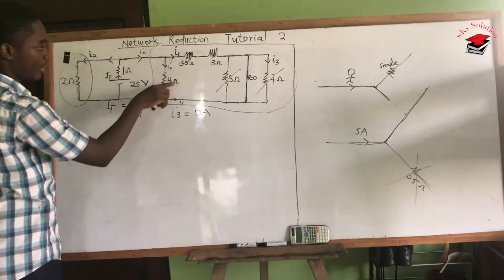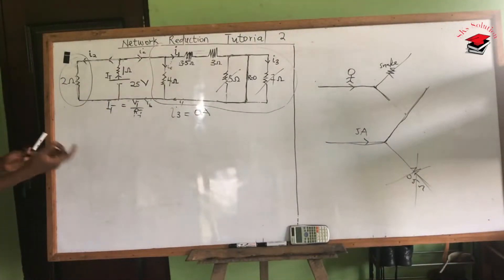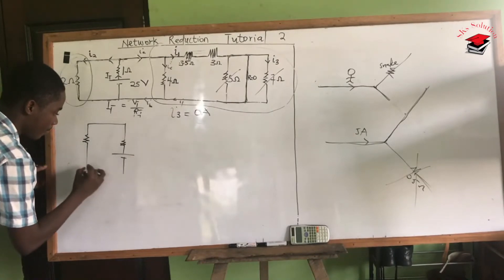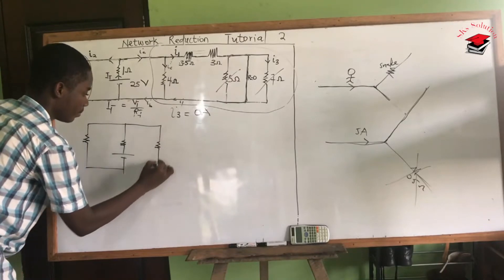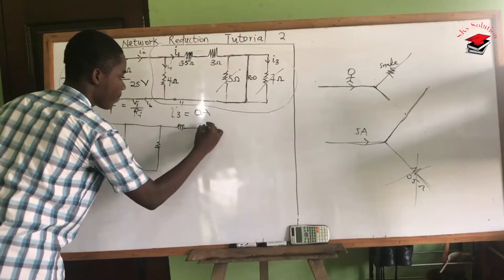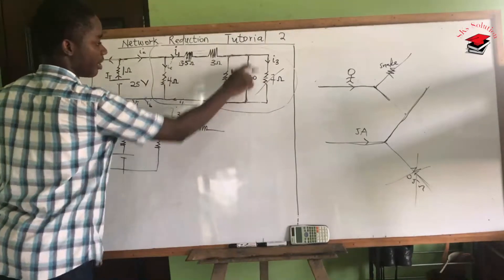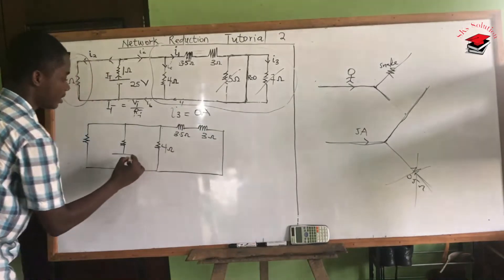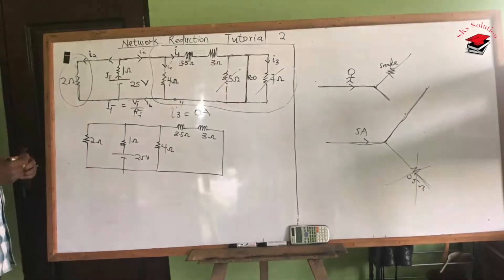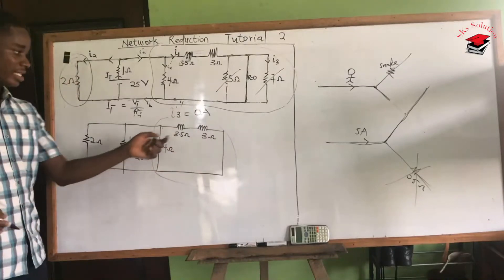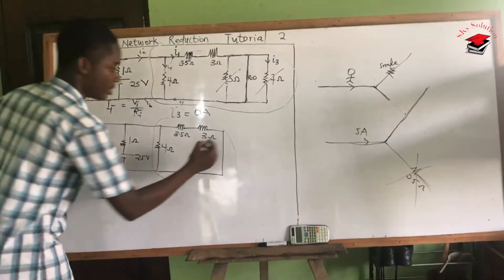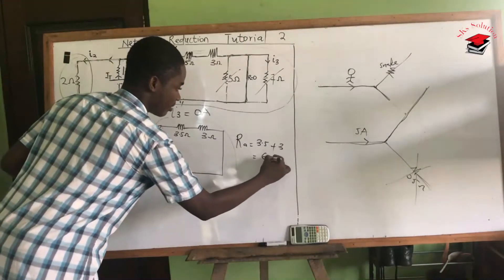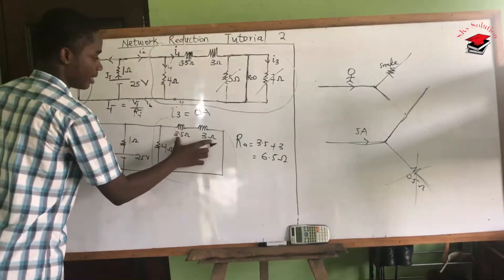We are left with three resistors on this side: 3 ohms, 3.5 ohms, and 4 ohms. Let's draw this portion again, ignoring the five-ohm and seven-ohm resistors and keeping the short circuit. We have a 3-ohm, 3.5-ohm, and 4-ohm with a 25-volt source. The 3.5 and the 3 are on the same branch in series, so the equivalent Re equals 3.5 plus 3, which gives Re = 6.5 ohms.